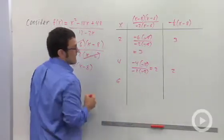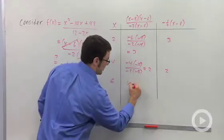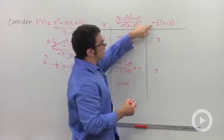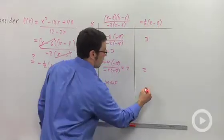If I plug in 6, this is going to be undefined. If I plug 6 in here, I get 6 minus 8, negative 2 times negative one-half, 1.